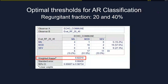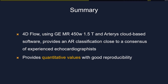After trying different thresholds, we selected 20% and 40% regurgitation fraction with 4D flow MRI to achieve the best agreement with TTE. Under these conditions, we reached 87% agreement — 29 out of 33 cases — yielding a weighted kappa of 0.82, which represents good agreement. In summary, using the GE MR sequence and Arterys cloud-based software, we provided an aortic regurgitation classification very close to expert echocardiographer consensus, with good reproducibility.